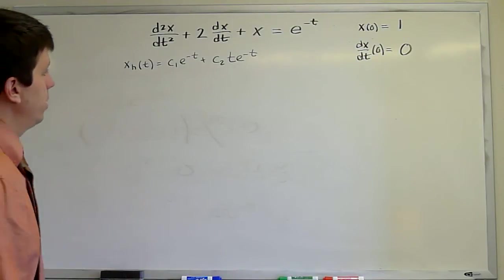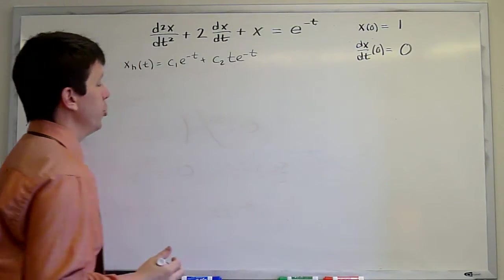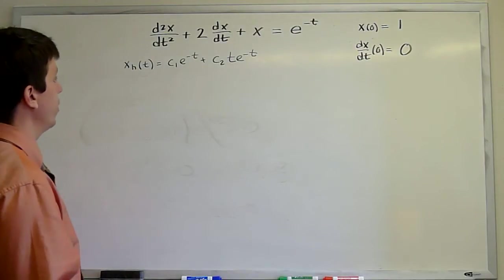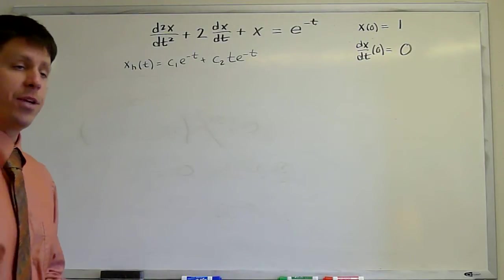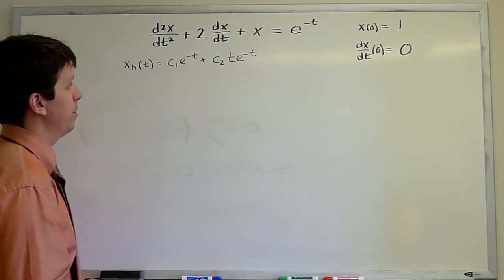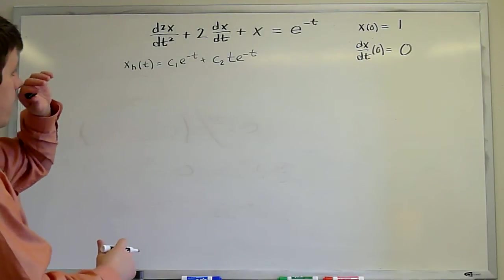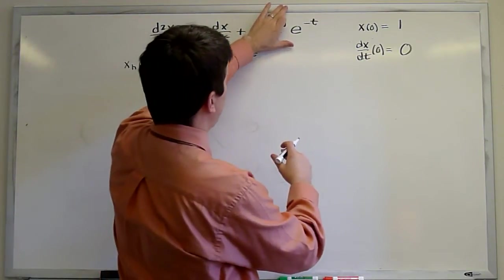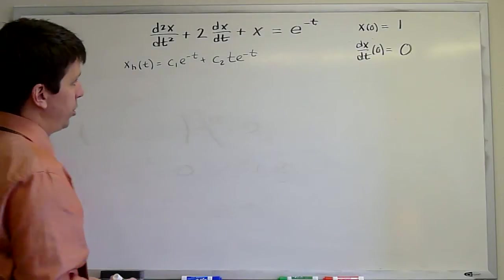We found the homogeneous problem and we now turn to the particular solution, undetermined coefficients. This is really where undetermined coefficients comes in. But given a general problem, you first have to find the homogeneous solution. We now turn to our guess. Our guess for undetermined coefficients, it's a simple exponential.